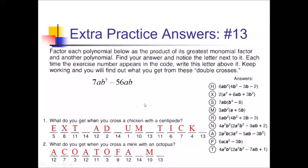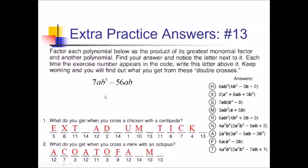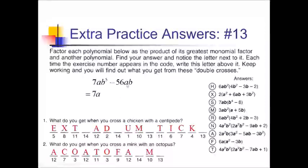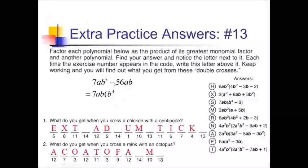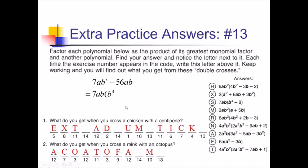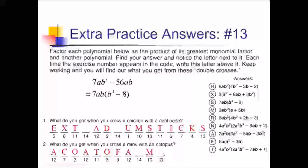For problem 13, our common factor is 7 for the numbers. For letters, we can take out A to the first and B to the first. Dividing: 7AB⁵ divided by 7AB gives B to the fourth; negative 56AB divided by 7AB gives negative 8. So we have 7AB on the outside and B to the fourth minus 8 inside — that's choice S. Spot 13 gets an S here, and at the very end, and also at the end of the other riddle.